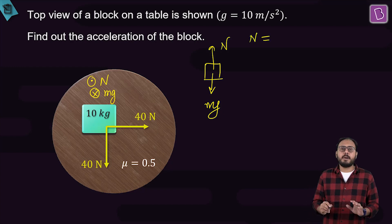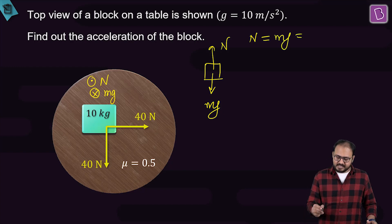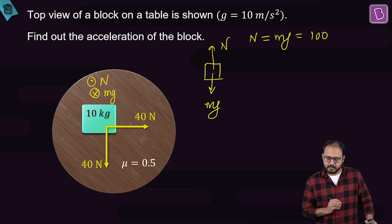Because nothing is happening perpendicular to the table, N equals mg. Mass is 10 kg and g is 10, so 10 times 10 equals 100 newton.